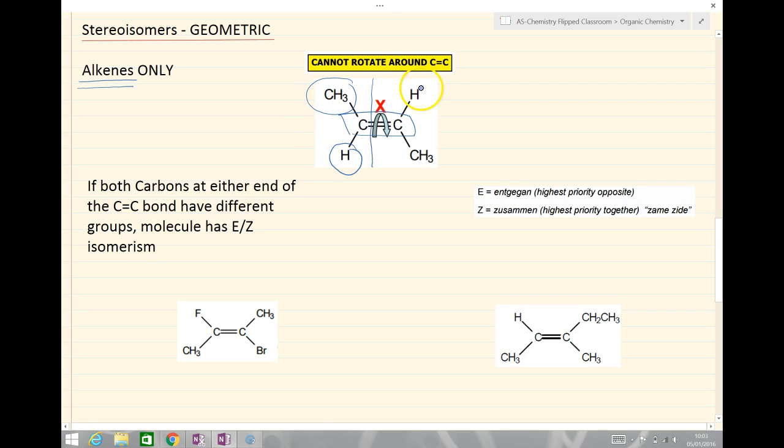Then we go to the right-hand side. We look here. We've got a hydrogen and a methyl group. These, again, are different. Therefore, we have different groups at either end of our carbon-carbon double bond. And this molecule will therefore show EZ isomerism.